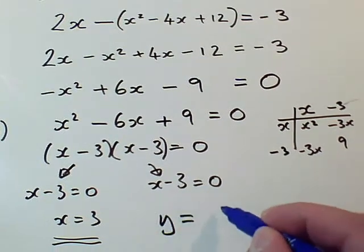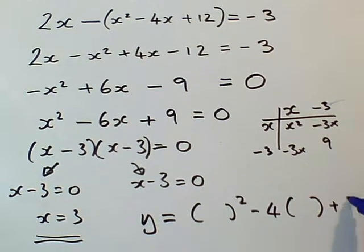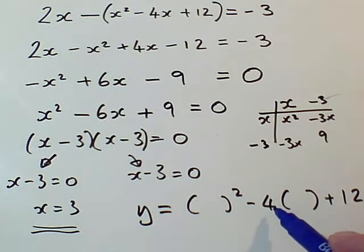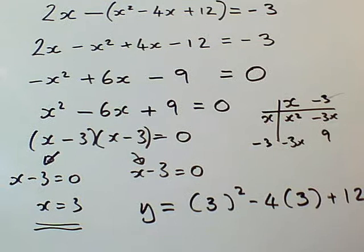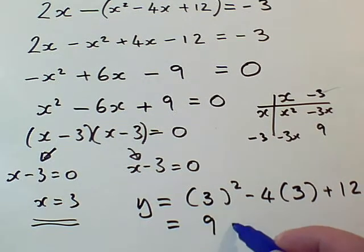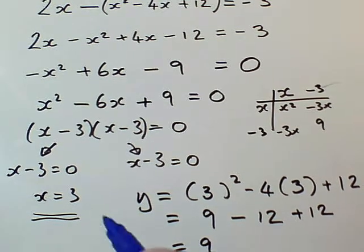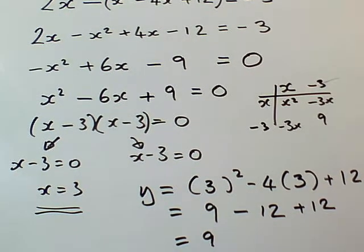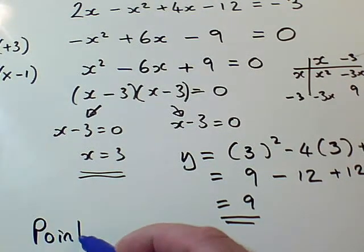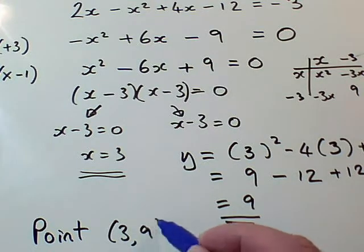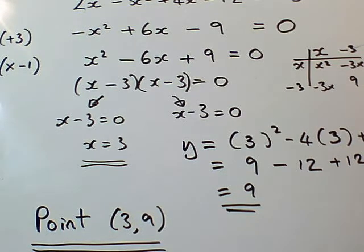So y equals x² - 4x + 12. But of course, I'm going to take x to be what I know x is, which is 3. So it's 3² - 4 times 3 + 12, which is 9 - 12 + 12, which equals 9. So I've got x equals 3, y equals 9. Those are my coordinates, but I should give the answer as my point in coordinate form, which is (3, 9). So I've got the coordinates of the point where the graphs intersect.